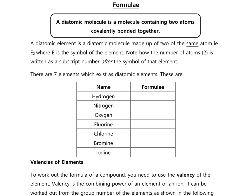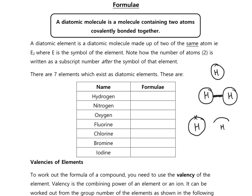Hydrogen doesn't exist as single hydrogen atoms — it exists as two hydrogen atoms with a covalent bond between them. If we think of the dot-and-cross diagram: hydrogen only has one electron and it wants two to have a full outer shell, because it's just the first shell. So two hydrogen atoms pair up and share their electrons so they both have a full outer shell. All of these atoms exist like that. Oxygen is very similar, but it shares two electrons per atom.